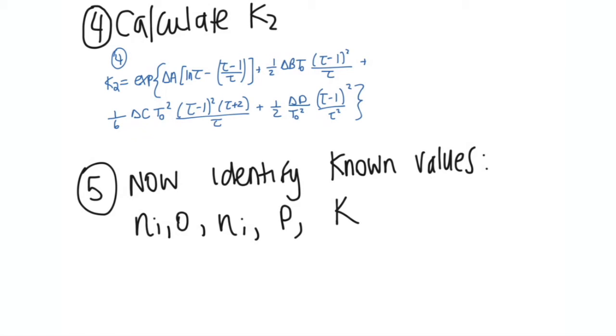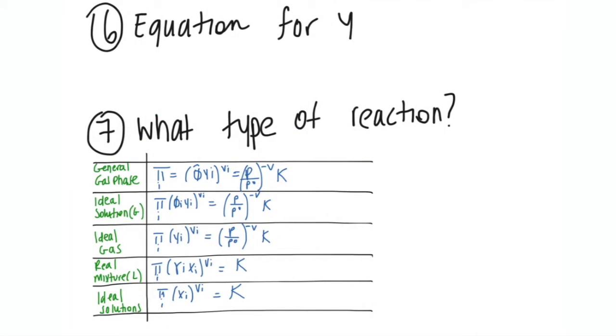Step number five, you'd identify all your known values - so your initial amount of moles, your amount of moles of some species i, pressure, your equilibrium constant. So identify all the things you know and write down their values. And then you're going to write down your equation for y. So at the beginning I said this is your equation: yi is equal to (ni naught + sum of νij·εj over j) over n naught.